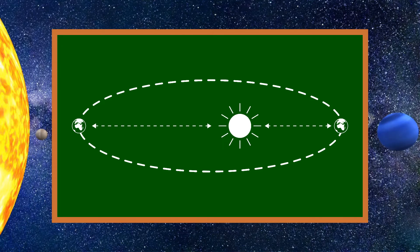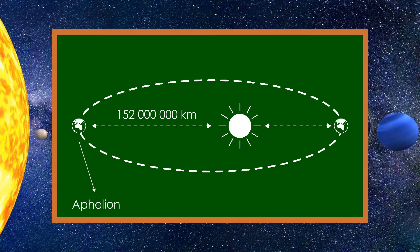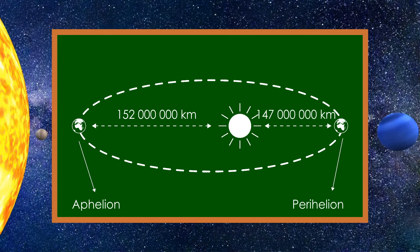The farthest distance between the Earth and the Sun is about 152 million kilometers. That position of the Earth is called aphelion. The opposite position is called perihelion, which is about 147 million kilometers.